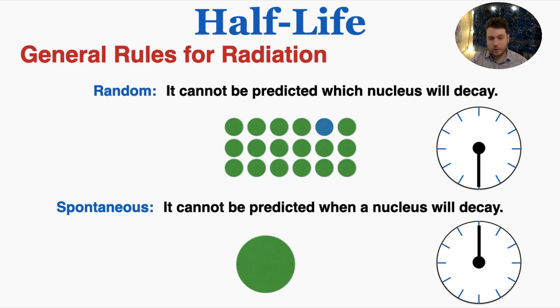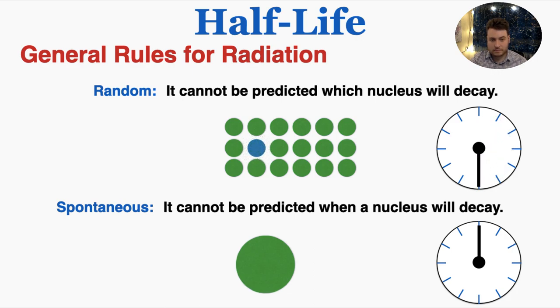Even if we were able to rewind the entire universe and observe it again, it's possible that a different atom in the material would decay. And it's also spontaneous, which means it cannot be predicted when a nucleus will decay.